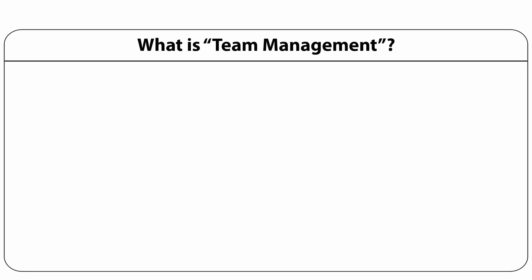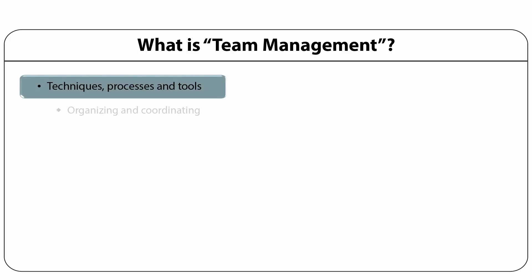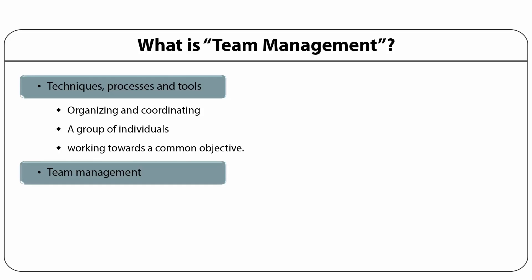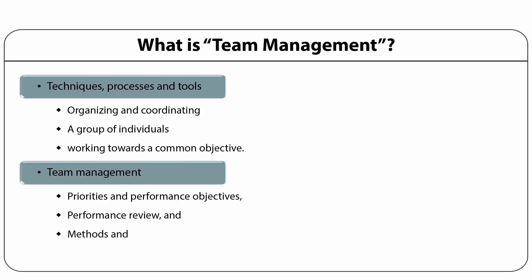We have seen what a team means and what its features are. So how do we manage this team? Team management refers to the techniques, processes, and tools for organizing and coordinating a group of individuals working towards a common objective. Team members need to learn how to help one another, help other team members realize their true potential, and create an environment that allows everyone to go beyond their limitations. Team management typically involves setting team priorities and performance objectives, reviewing performance and methods employed, and spearheading the team's decision-making processes.